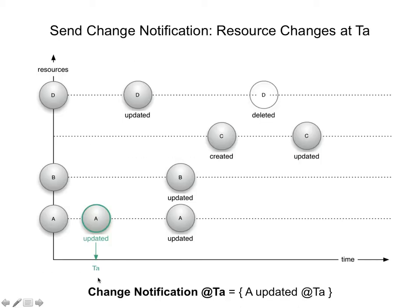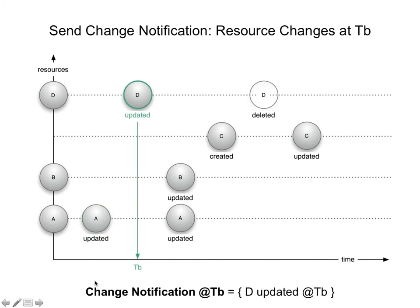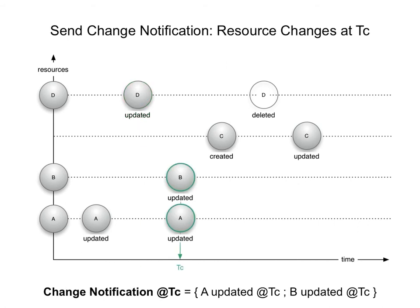Going back to our depiction of the source and its evolving resources, as changes occur notifications are being sent. At time A, resource A is updated and a change notification is sent. Later, resource D is updated at time B and a notification is sent. Then at time C, both A and B get updated at the same time and a notification is sent about that, and so on and so forth.